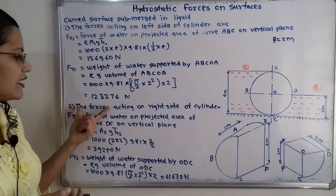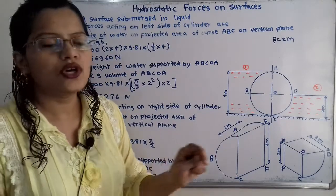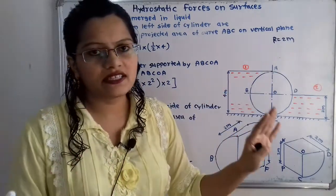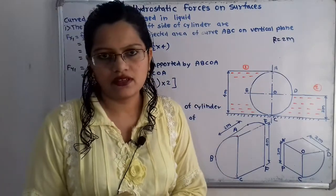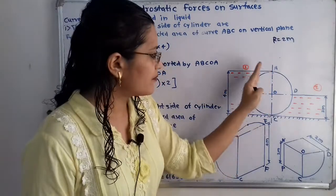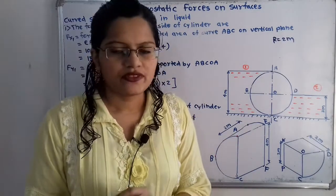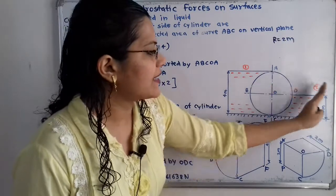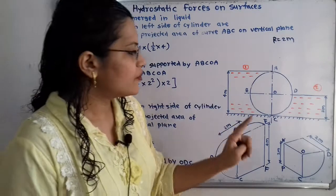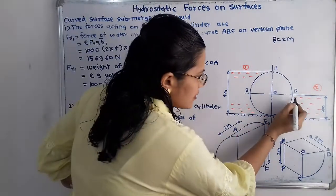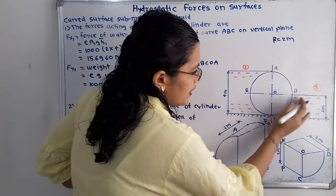Now we move to the forces acting on the right hand side of the cylinder. From the left side we have FX1 and FY1. For the right hand side, a quarter circle is in contact with water.